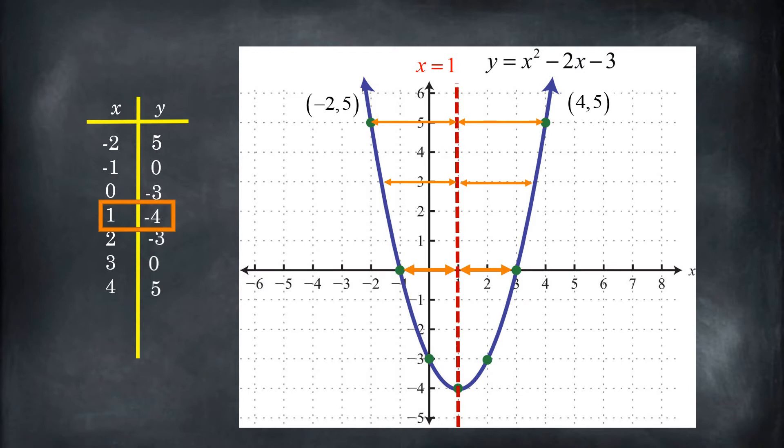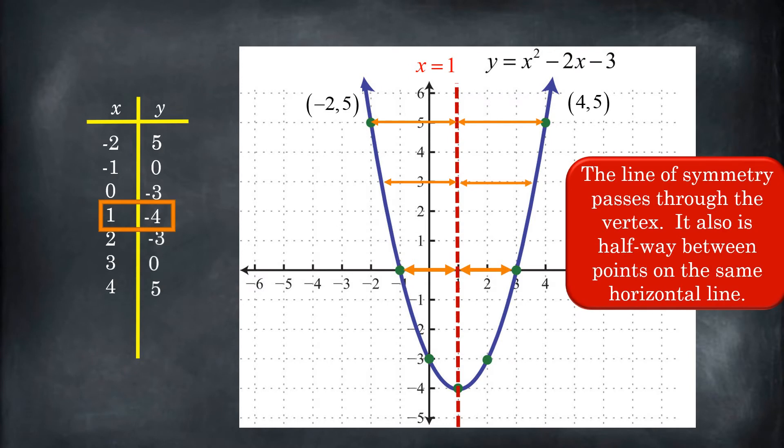And most importantly for our x-intercepts. So here's the deal. That line of symmetry is halfway between our two x-intercepts. There's another word for halfway: midpoint. So the line of symmetry goes through the midpoint of the distance between our two x-intercepts.